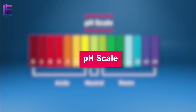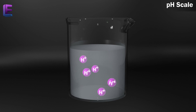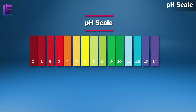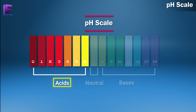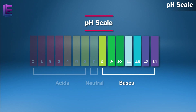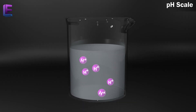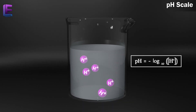pH scale. The scale used to measure the concentration of H-plus ions in a liquid is the pH scale. The pH of a liquid is the number used to denote its acidic or basic nature. The value of neutral pH is 7. Liquids with a pH below 7 are acids, and those with a pH greater than 7 are bases. pH is defined as the decimal logarithm of the reciprocal of the hydrogen ion activity in a solution.